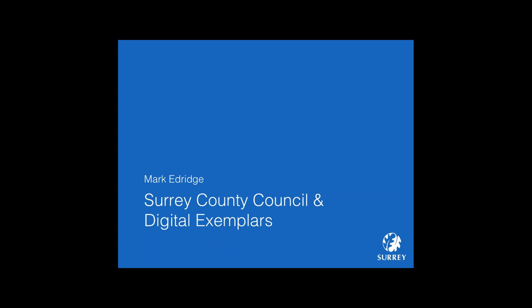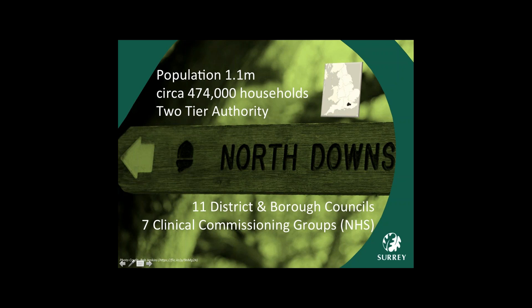I just wanted to start with a little bit about how Surrey County Council is formed. We're a council that's a two-tier authority, so there's us and districts and borough councils. There are 11 within our boundaries. We also have seven clinical commissioning groups for the NHS. We have a population of around 1.1 million and there are 474,000 households in the area.